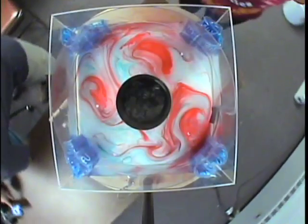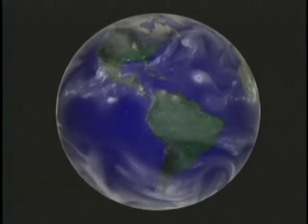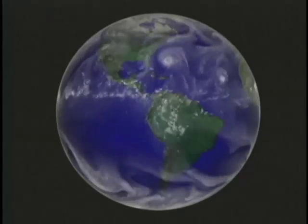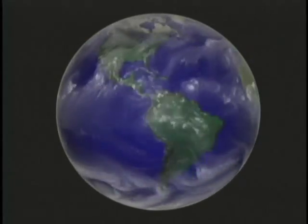So in this simple system, which we can do on a tabletop, we can show how the difference in temperature between the poles and the equator plus the rotation of the planet leads to the complicated swirls that we see in our weather patterns on the globe.